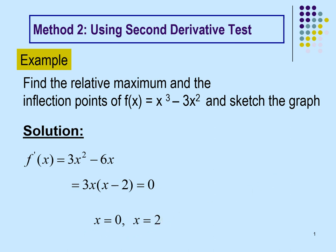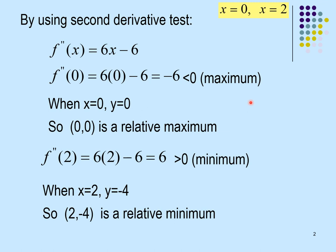So x = 0 and x = 2 are the critical values. Using the second derivative test, f''(x) = 6x − 6. Substituting x = 0 into the second derivative gives −6, which is less than 0, indicating a relative maximum. To find the y-value, substitute x = 0 into f(x), giving y = 0. So the point (0, 0) is a relative maximum.